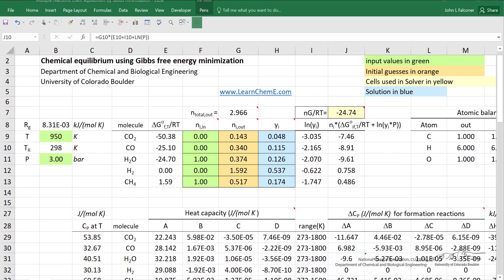We input the number of moles that are involved in the reaction, in this case one mole of water and one mole of methane. Then we make guesses. Right now I'm showing the answer, but let me pause and put in guesses. I've guessed that the outlet number of moles is one for each of the five components, and therefore we calculate the mole fractions.